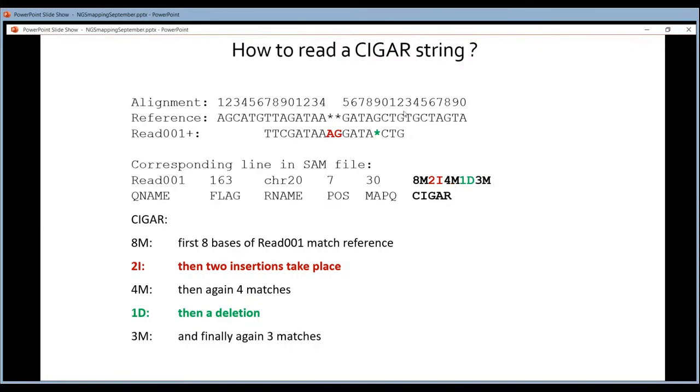How does it work? You have your reference, you have your read. You know the sequence of both. You know that the alignment should start on position 7 on chromosome 20. So let's assume this is chromosome 20. Position 7 is here. So you know that the alignment has to start here. And then you can read the CIGAR string. So there are eight matches. That's this part, where the two sequences are written underneath each other.